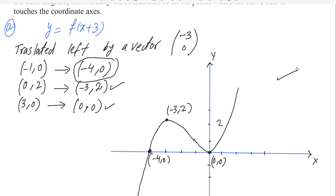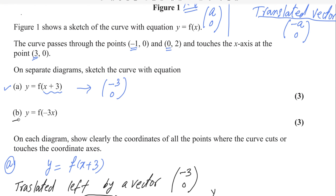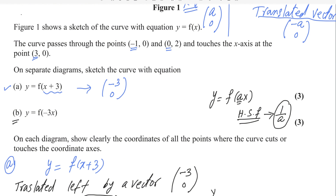For the second part, there are two types of transformation. If there is a negative inside — for example f(-x) — it is called a reflection in the y-axis. The graph will reflect about the y-axis. And for a function y = f(ax), the horizontal stretch factor is the reciprocal, which is 1/a. So there are two transformations: reflection in the y-axis, and a horizontal stretch factor.